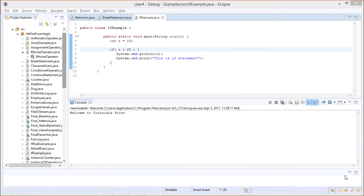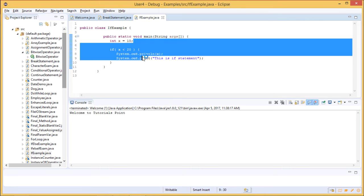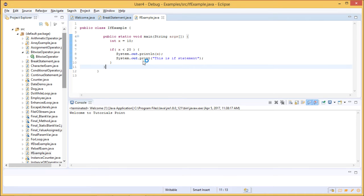In this example we try explaining how if works. The class name is IfExample, and then the main method. Under the main method we would be writing the code that needs to be executed.